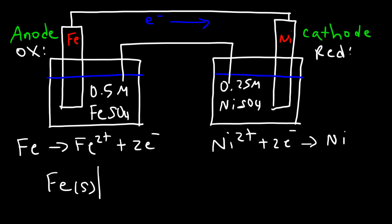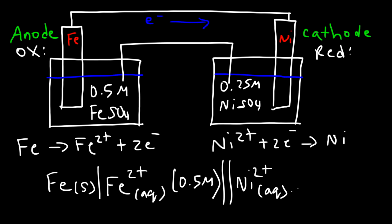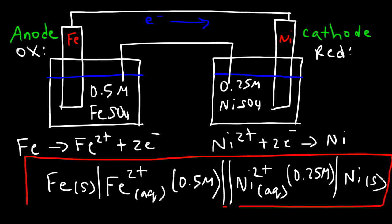Starting with the anode, we write iron metal in the solid state, then Fe²⁺ in the aqueous state at a concentration of 0.5 M. On the right side, we have the nickel²⁺ ion in aqueous state at 0.25 M, and finally the nickel cathode in solid state. That is the line notation for this particular galvanic cell.